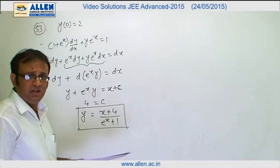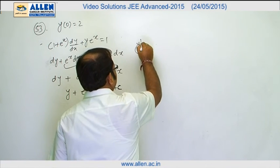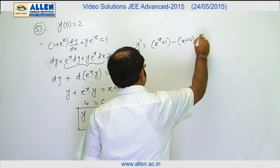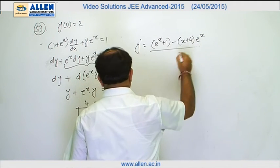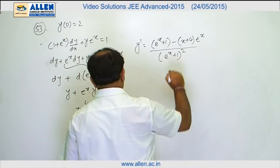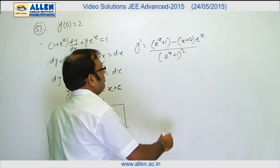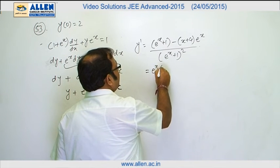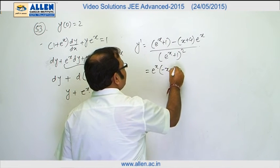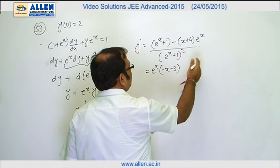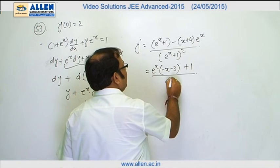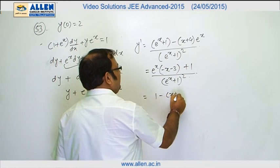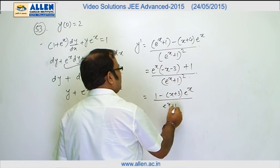So if we differentiate it, y' = [(e^x + 1) - (x + 4)e^x] / (e^x + 1)². Now if we collect e^x, then we have got e^x common. In the bracket we will be left with -x - 3, and then we are left with only +1 divided by (e^x + 1)². So basically [1 - (x + 3)e^x] divided by the positive denominator is what we have as the derivative.